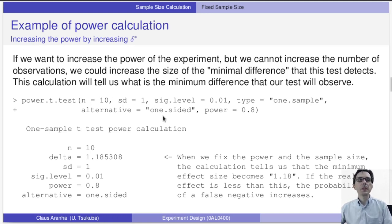So for instance, if we do the same function as before, but instead of defining the delta, we define the power. So we say that we want a power of 80%. In this case, it will give us a delta of 1.18. So this is the minimal effect size. If the real effect size is less than this, the probability of a false negative increases.